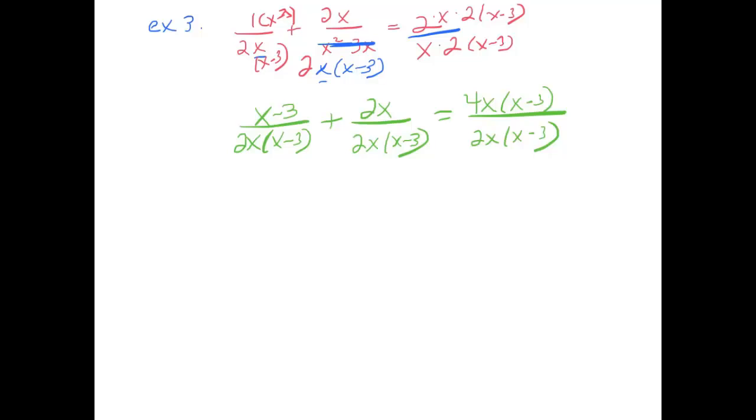Now don't go canceling out these x minus 3's. Obviously they would cancel, but that's not the point. The point is so that we have a common denominator here. And now if I combine these, we get x minus 3 plus 2x over 2x times x minus 3. And let's see, I'll distribute my 4x, so I get 4x squared minus 12x over 2x times x minus 3.